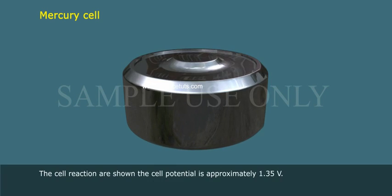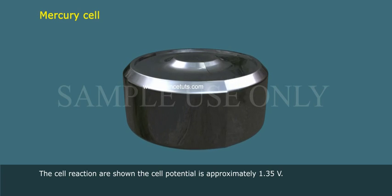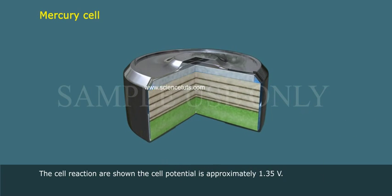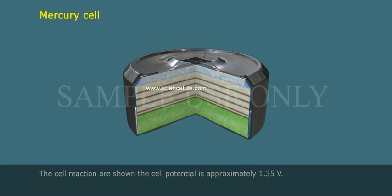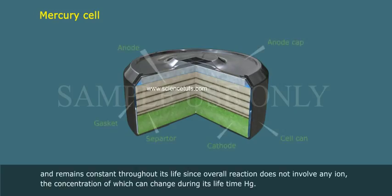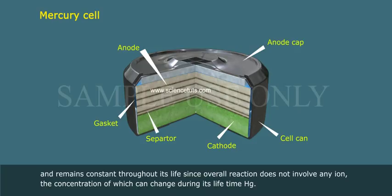Mercury cell: The cell potential is approximately 1.35 volts and remains constant throughout its life, since the overall reaction does not involve any ion whose concentration can change during its lifetime — unlike Hg (mercury).